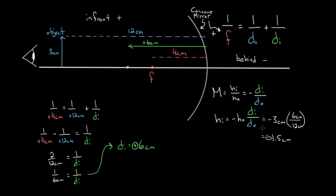The negative sign means the image is inverted — it got flipped over and is upside down compared to the original object. The 1.5 centimeters is how tall it's going to be. So we end up with an image six centimeters from the mirror, 1.5 centimeters tall, and upside down. That's what you'd see looking into this mirror — like a fun house mirror. You'd see an upside-down image that might look like you could reach out and grab it, but it's an optical illusion. That's our concave mirror example.